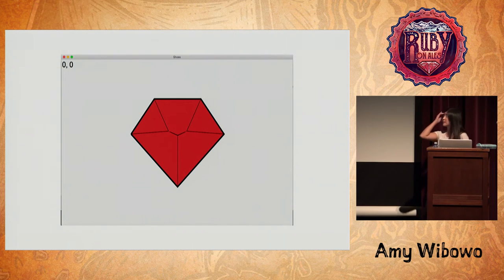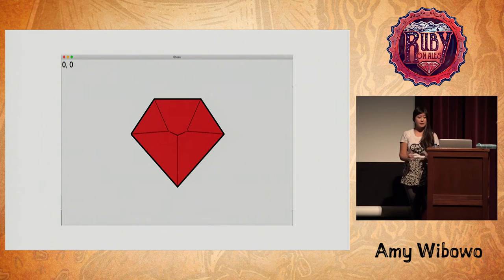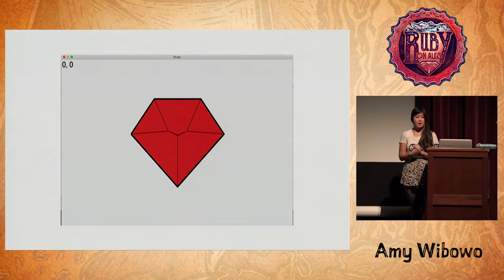Now that we have a skeleton, can we fold along it to cut out the Ruby with a single cut? Almost. It turns out the straight skeleton is most of, but not the full set of folds that we need to make to create a shape with a single cut.